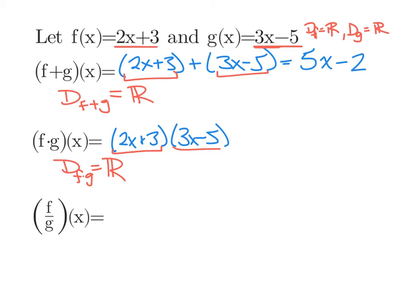But since we're multiplying two binomials together, it's simple enough to just foil it out. We'll get 6x squared, minus 10 and plus 9 makes -1x, and -15.